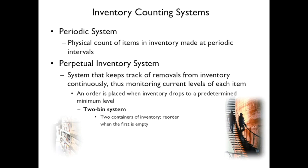Some people have the strategy of buying enough so they never run out — they'll go to Costco and buy a great big bottle of shampoo. The problem is, at some point you're going to run out, so what's your mechanism to count? I prefer the two-bottle system.